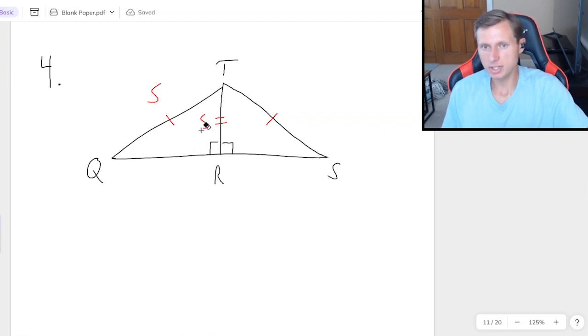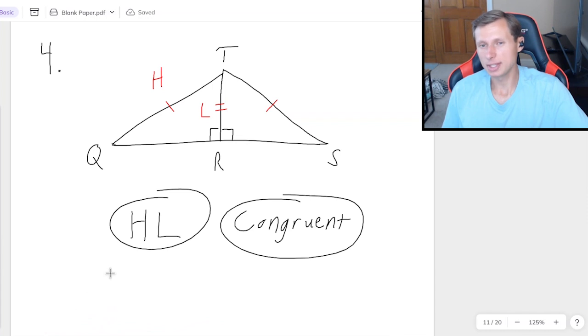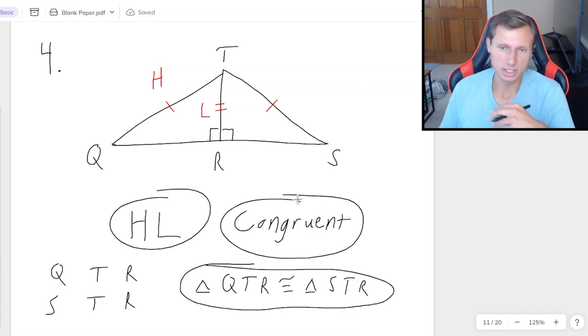which means I don't do sides and angles. Instead, I say hypotenuse. And this shared one, TR, is a leg of the triangle. So in other words, I have HL, hypotenuse and leg. So the triangles are congruent. And again, if I wanted to write that the triangles are congruent, I need to recognize that for the left triangle, Q is going to match S on the right triangle. T for the left triangle matches the T on the right. And R for the left matches the R for the right. So this time there's two shared letters. And I'm going to write that triangle QTR is congruent to triangle STR. And there we go. That's all we need to write for that one.